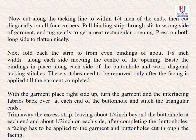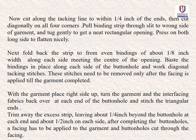Cut diagonally on all four corners. Pull the binding strip through the slit to the wrong side of the garment and tuck gently to get a neat rectangular opening. Press on both long sides to flatten. Fold back the strip to form even binding of about 1/8 inch width along each side, meeting at the center of the opening. Baste the binding in place along each side and work diagonal tacking stitches, which are removed only after the facing is applied. Turn the garment back at each end and stitch the triangle ends. Trim away the excess strip, leaving about 1/4 inch at each end. After completing the buttonhole, apply facing to the garment and cut the facing to match the buttonholes.